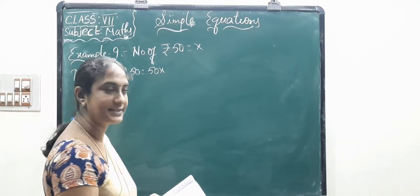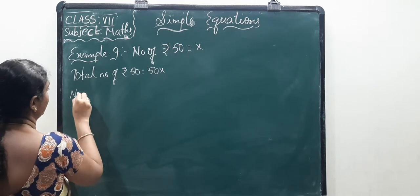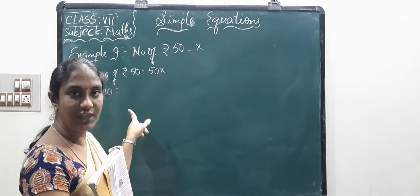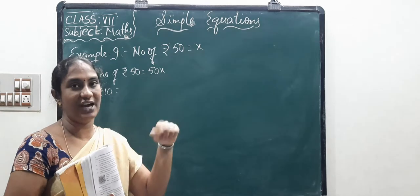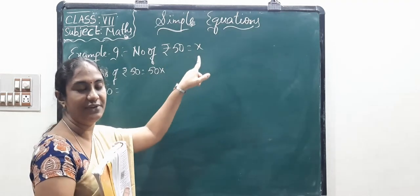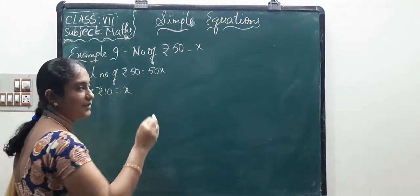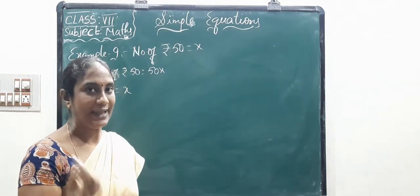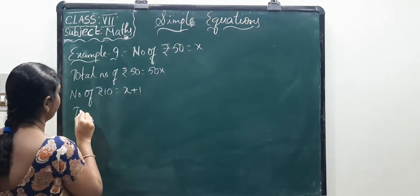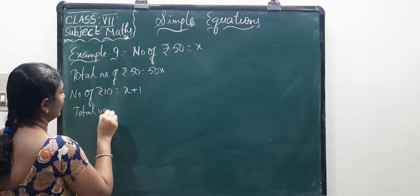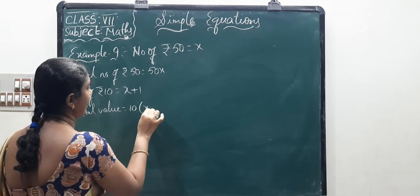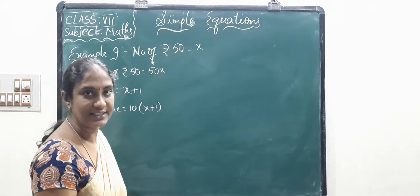Now for the 10-rupee notes: the question says 10-rupee notes must be 1 more than the 50-rupee notes. Since 50-rupee notes are X, and 'more than 1' means addition, the number of 10-rupee notes is X plus 1. Total value of 10-rupee notes equals 10 into (X plus 1).